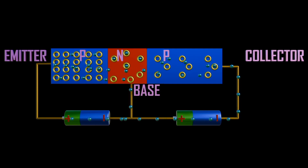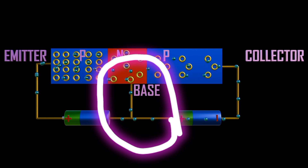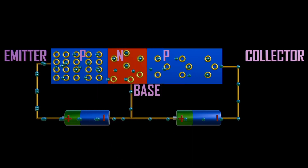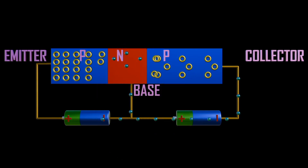The base is the middle section, which forms the PN junction between the emitter and collector.